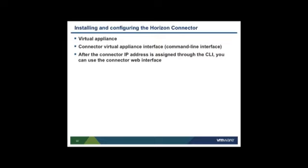The Horizon connector is the interface between the Active Directory, the ThinApp repository on-premises, and the Horizon service in the cloud. The connector is a virtual appliance that you download from the VMware Download Center and start on an ESX or ESXi host. For initial configuration, you use the connector virtual appliance's command line interface. The connector operating system is SUSE Linux, and it is assigned an IP address through the CLI, after which you can access the connector through the web interface.